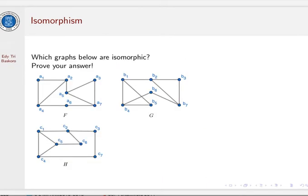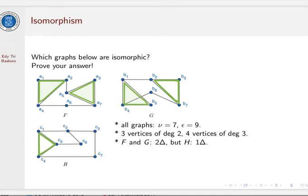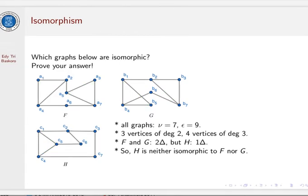Now, see these three graphs: F, G, and H. Which ones are isomorphic? We can see that all graphs have seven vertices and nine edges. There are three vertices of degree 2 in red color and four vertices of degree 3 in blue color. F and G have two triangles here, but in H, there is only one triangle. So it is neither isomorphic to F nor G.